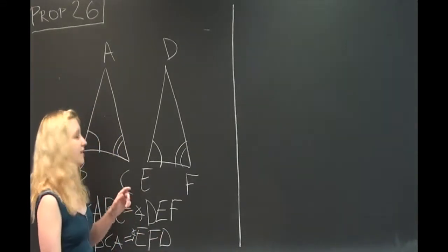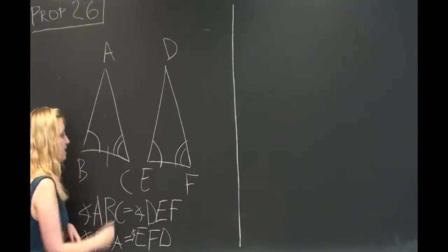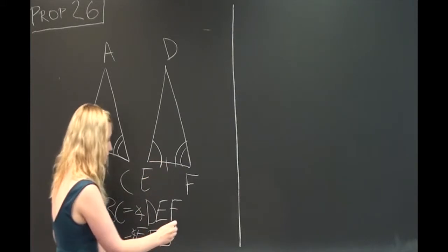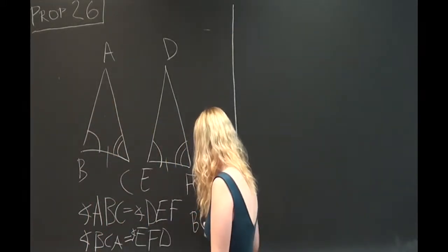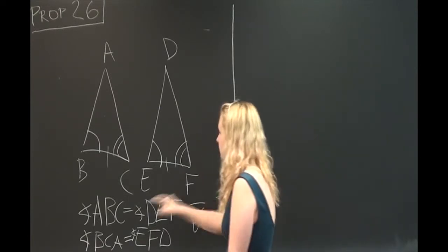And in this first example, we're going to say that the line between the two equal angles is equal. So that line BC equals line EF. So that is our given.